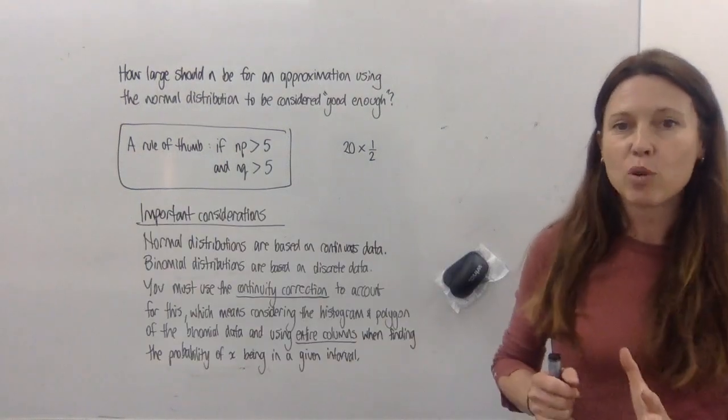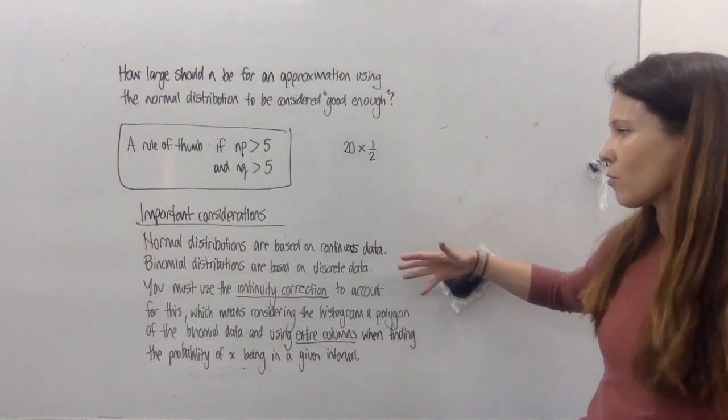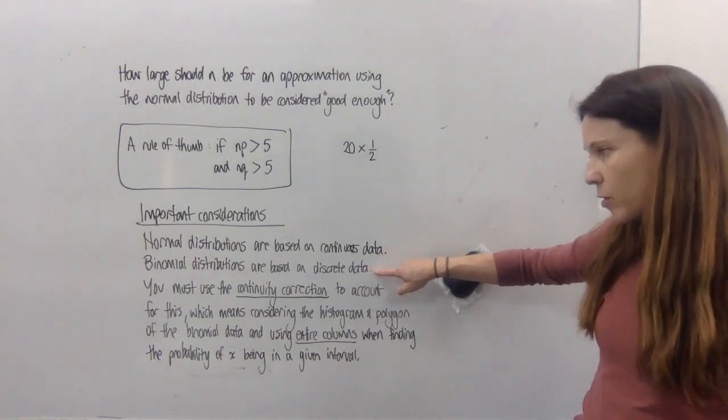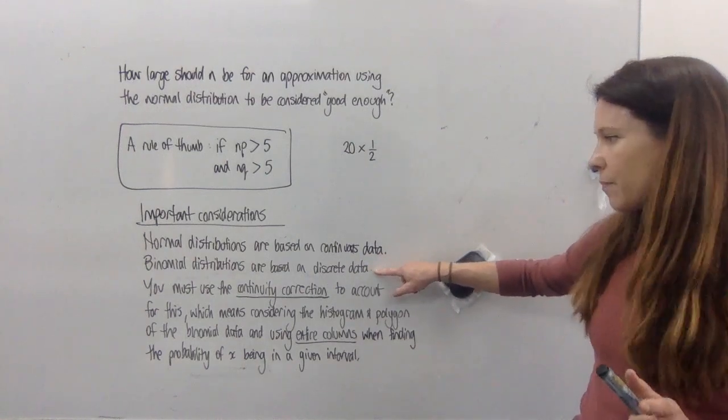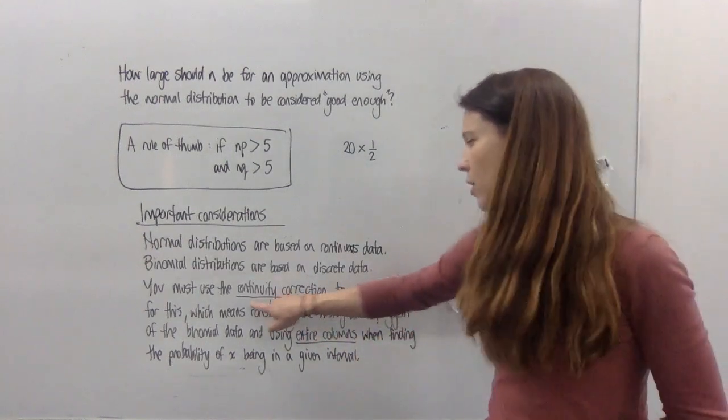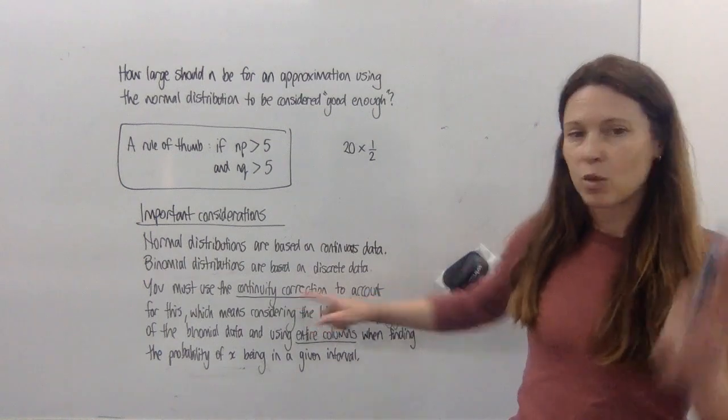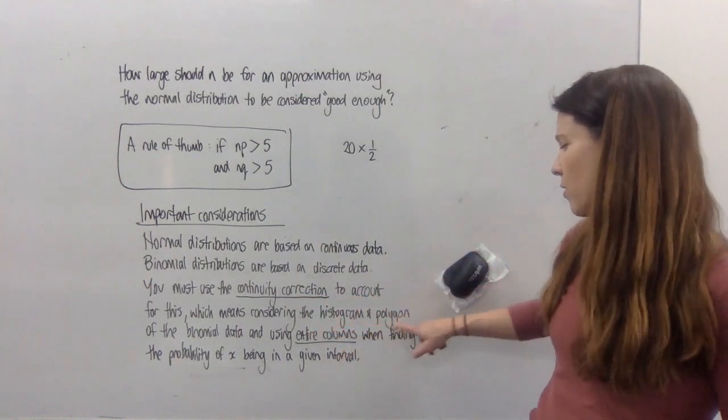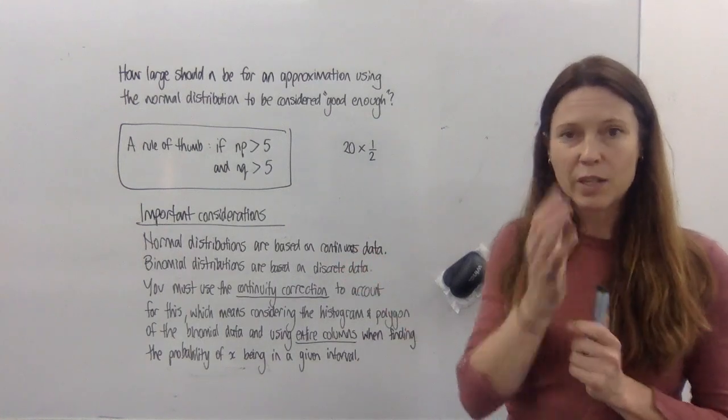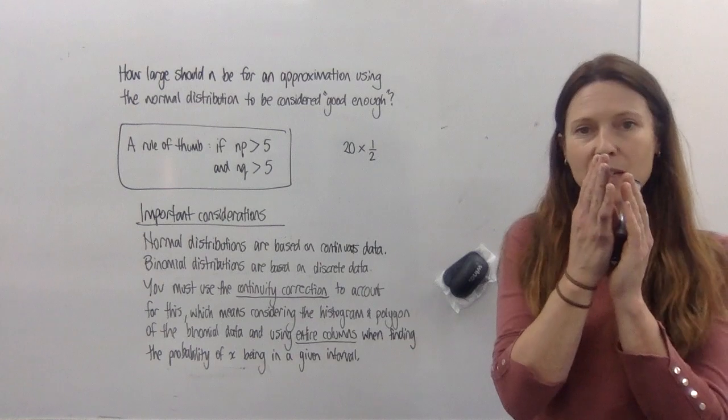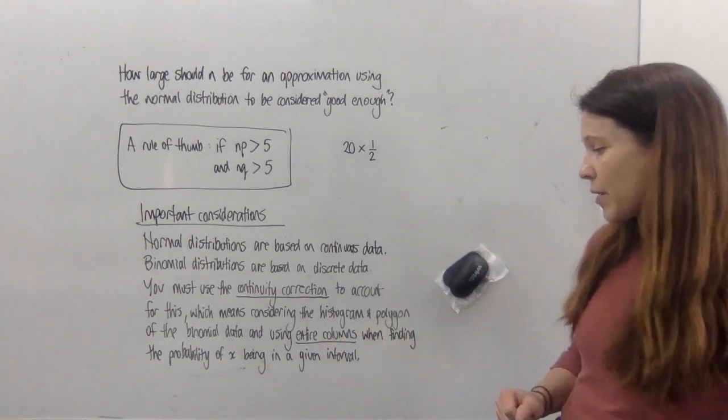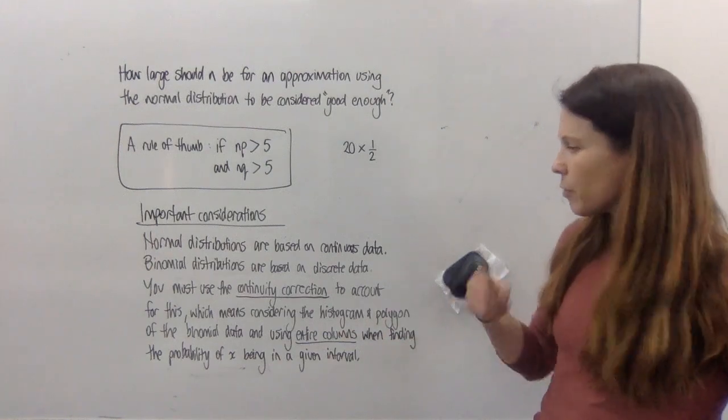Now, the other really important consideration that you need to write down and consider every single time is that normal distributions are based on continuous data, whereas binomial distributions are based on discrete data. So anytime we are using these to approximate those, we have to use that continuity correction to account for this. And that means considering the histogram and the polygon, like we did in the last example, consider the width of that one that we're using as the cutoff, and know that we might need to go half a unit to one side or the other, when we're finding the probability of x being inside a given interval.